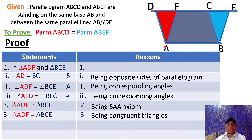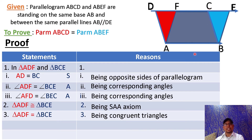Now, in this figure, you see ABCF. This ABCF is a trapezium. Why is it a trapezium? Because the base AB and FC are parallel. In a quadrilateral, if two sides are parallel, then it is called a trapezium. So here ABCF is a trapezium.